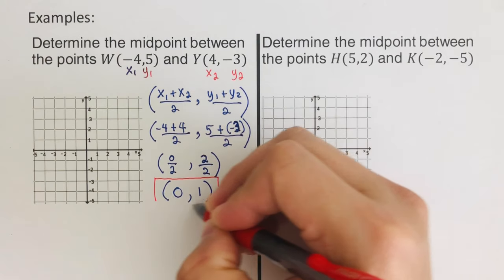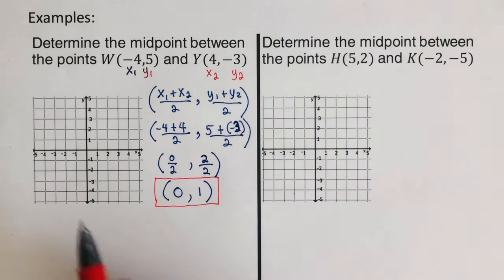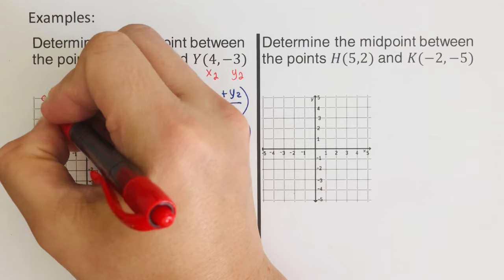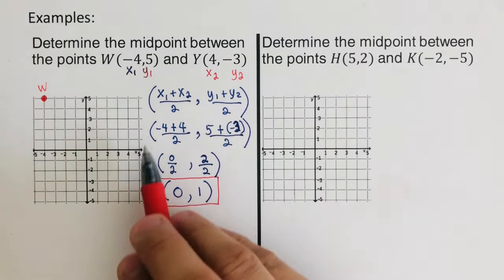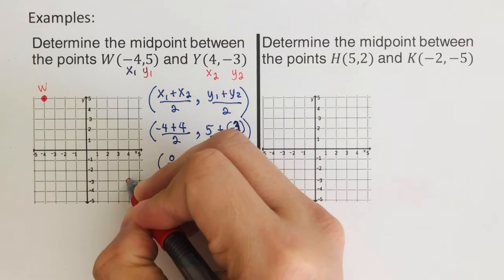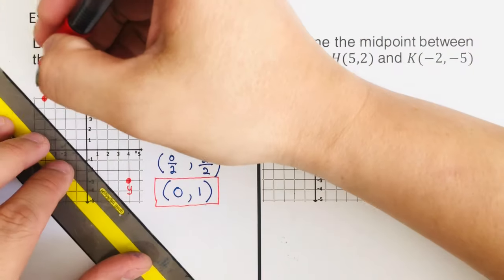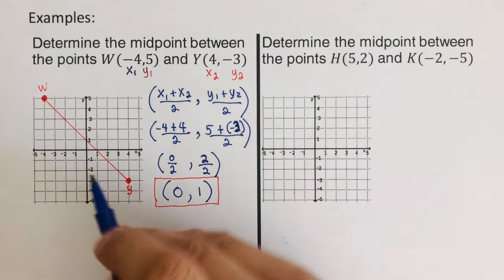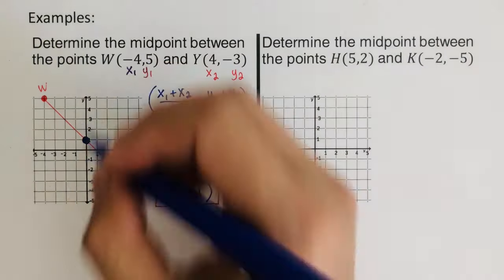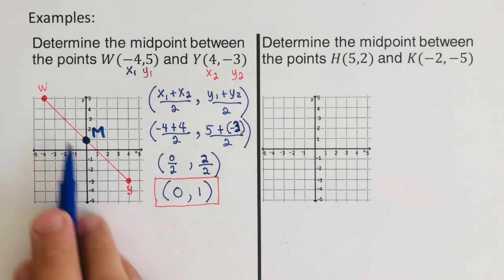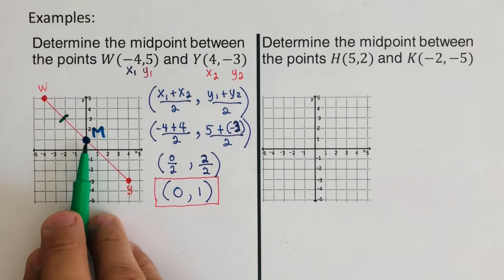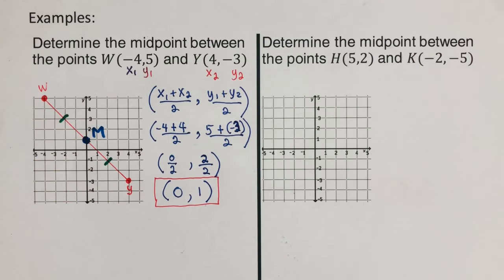Let's draw this on the graph to see if it makes sense. Point W is at (-4, 5) and point Y is at (4, -3). Connecting these two points gives us line segment WY. The midpoint M is located at (0, 1), which is right in between W and Y. The distance from W to M is congruent to the distance from M to Y, confirming that the midpoint is equidistant from both endpoints of the line segment.